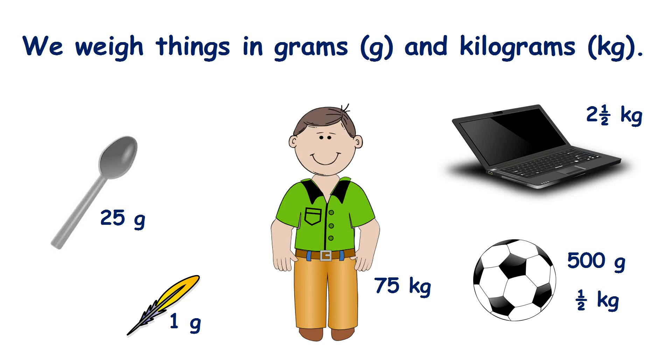We weigh things in grams and kilograms, so if you see g after a number you know that you have a weight in grams, and if you see kg after a number you have a weight in kilograms.